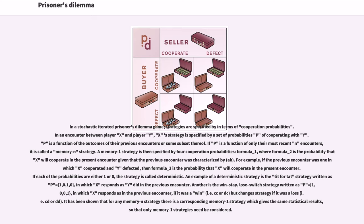If each of the probabilities are either 1 or 0, the strategy is called deterministic. An example of a deterministic strategy is the tit-for-tat strategy written as P = (1, 0, 1, 0), in which X responds as Y did in the previous encounter. Another is the win-stay, lose-switch strategy written as P = (1, 0, 0, 1), in which X responds as in the previous encounter if it was a win but changes strategy if it was a loss. It has been shown that for any memory-N strategy there is a corresponding memory-1 strategy which gives the same statistical results, so that only memory-1 strategies need be considered.